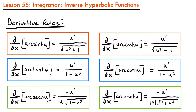If you look at the inverse hyperbolic tangent function and the inverse hyperbolic cotangent function, they actually have the exact same derivative — u prime divided by 1 minus u squared. From our previous lesson we talked about how they are not the same exact function because they are defined for different values of x. However, their structure is exactly the same.